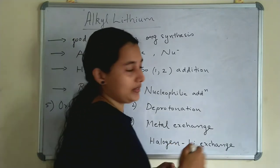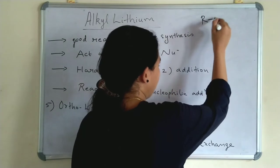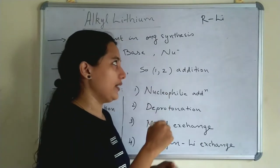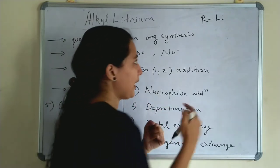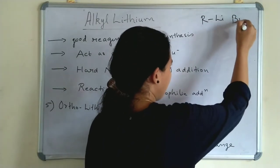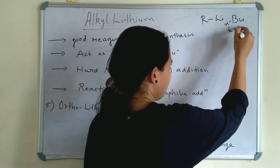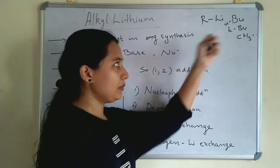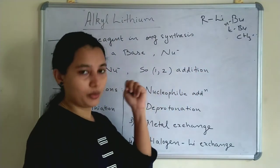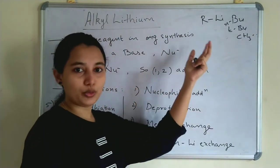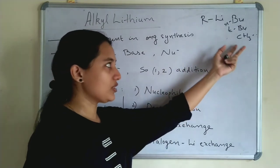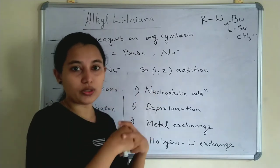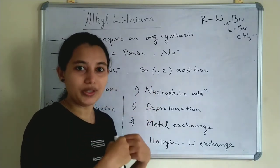Alkylithium is generally represented as R-Li. R can be any alkyl group — it can be butyl, n-butyl, tertiary butyl, CH₃, etc. So when it is n-butyl, it is called n-butyl lithium. When it is CH₃, it is called methyl lithium. These are common organolithium reagents used in reactions.